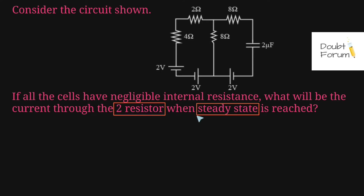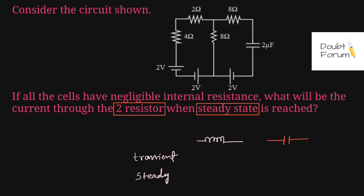Before we solve this question, we have to understand what does steady state mean. Always remember, whenever there is an inductor or a capacitor connected in a circuit, there would be two types of state for that circuit. The first state we name as the transient state, and the second state is the steady state. The behavior of an inductor as well as a capacitor for transient and steady state are different.